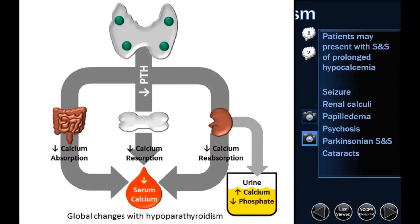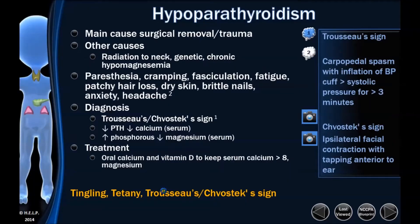In a hypoparathyroid state, if there's not enough parathyroid hormone, the gut is going to not absorb as much calcium. The calcium is going to stay in the bone and not end up going to the serum, and the kidney is going to let it go. So you'll have increased calcium in the urine, and you'll decrease the serum calcium in the end.